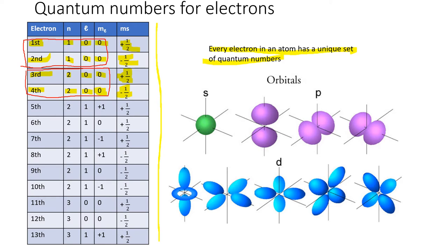For the fifth electron, we've exhausted the l equals zero options in n equals two, so we move to l equals one — p orbitals. There are now three options for m-sub-l: negative one, zero, or positive one. I'll arbitrarily choose positive one. Starting with plus one-half for the spin, the fifth electron's quantum numbers are: n equals 2, l equals 1, m-sub-l equals positive one, m-sub-s equals plus one-half.